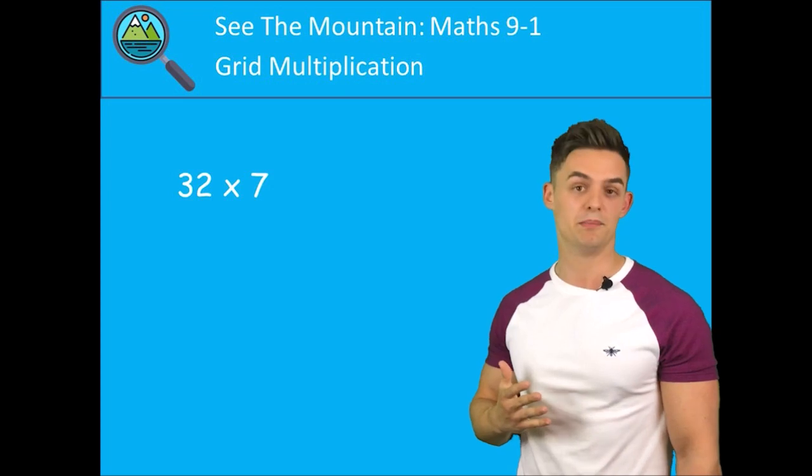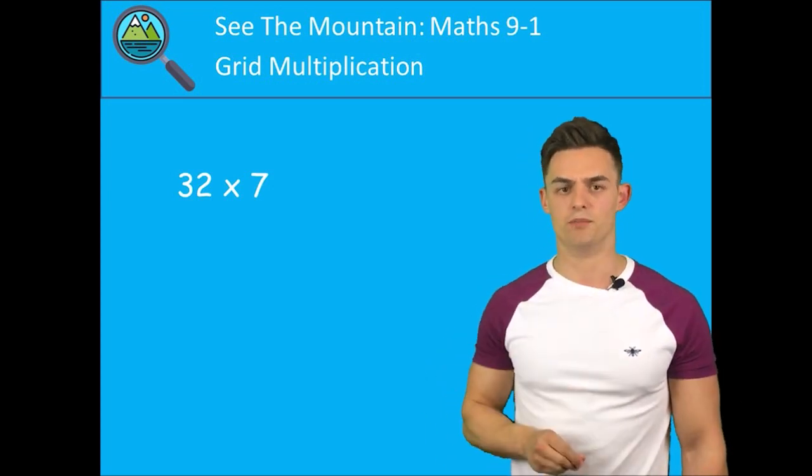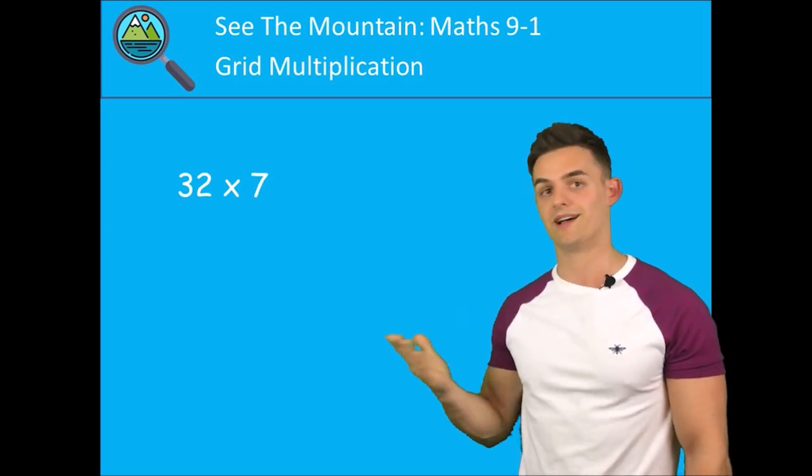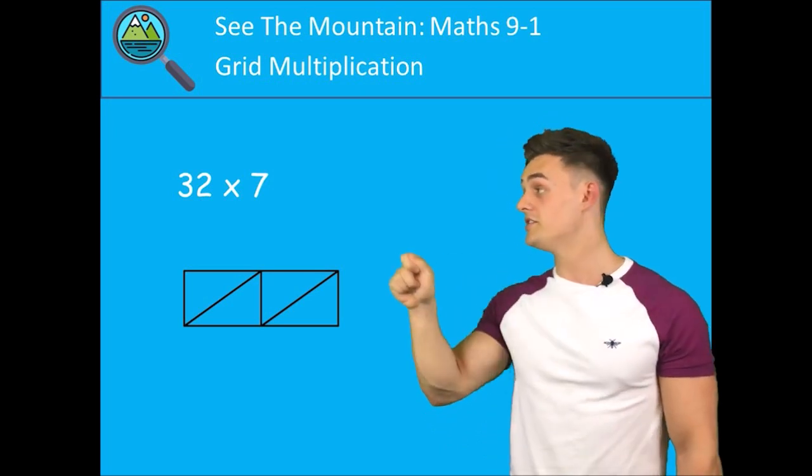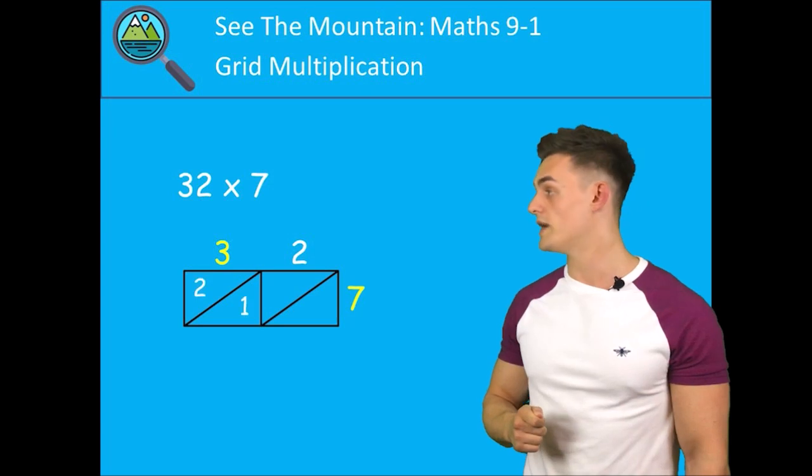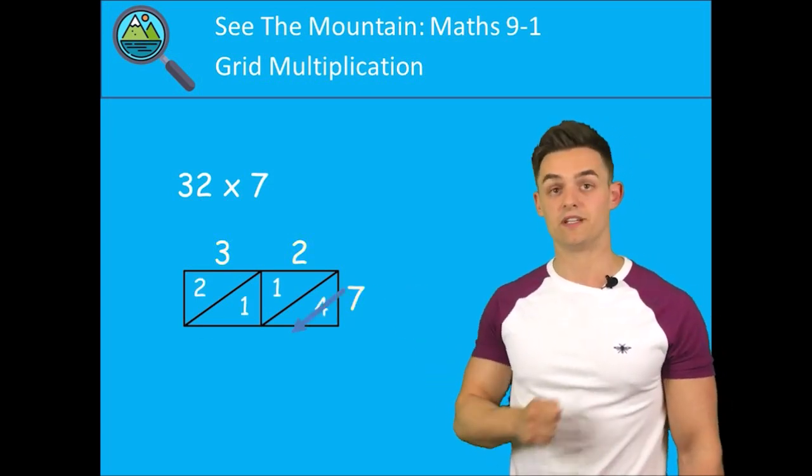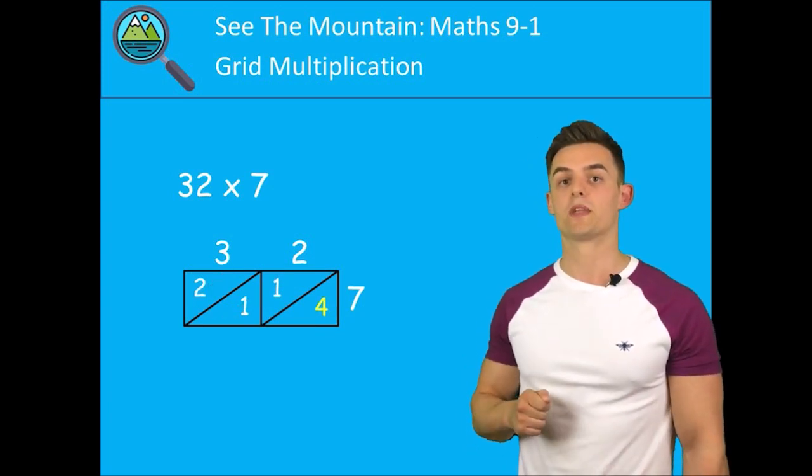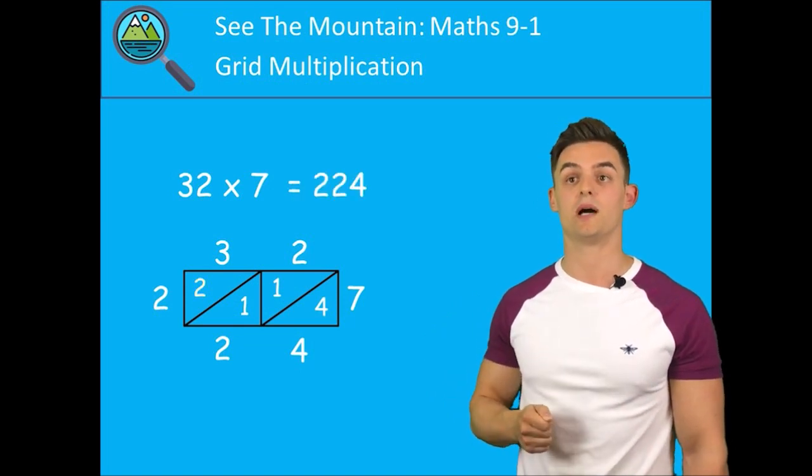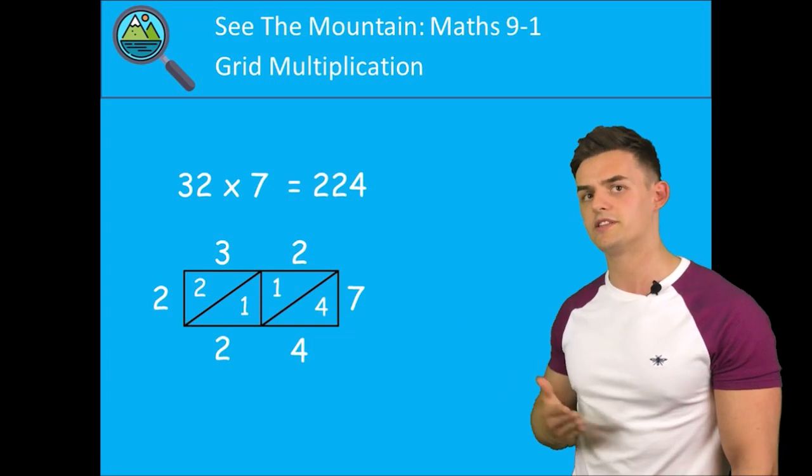Let's look at this example: we have 32 multiplied by 7. In our grid we have a two-digit number multiplied by a one-digit number, so our grid is going to be a two by one grid. We have the 32 across the top and the 7 down the side. 3 times 7 is 21, and 2 times 7 is 14. Then we add numbers from right to left down the diagonals: 4 is 4, 1 plus 1 is 2, and the 2 is the 2. So 32 multiplied by 7 is 224.